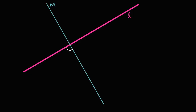What I'd like to do in this video is use some geometric arguments to prove that the slopes of perpendicular lines are negative reciprocals of each other. To start off, we have lines L and M, and we're going to assume that they are perpendicular — so they intersect at a right angle, as depicted right over here.